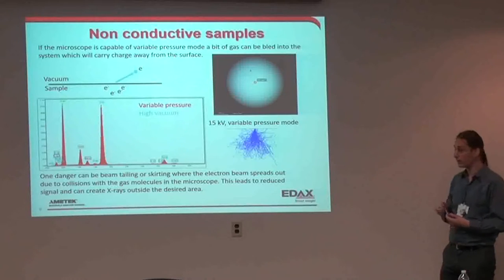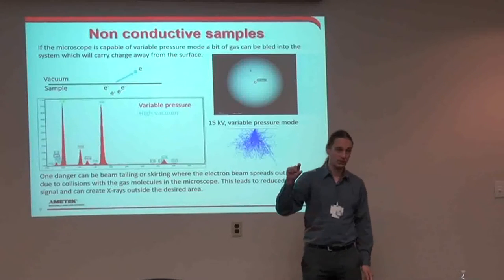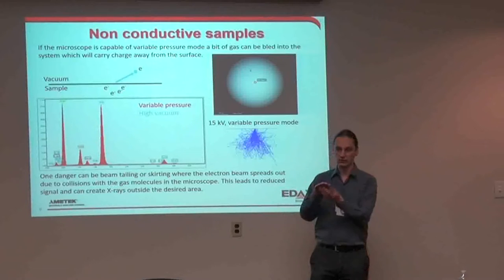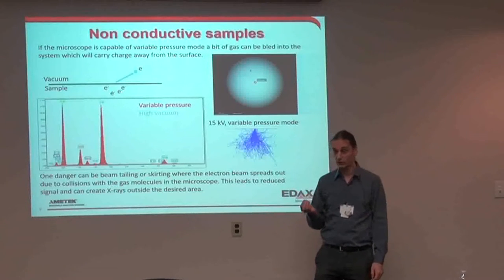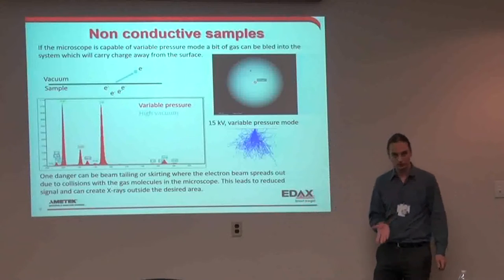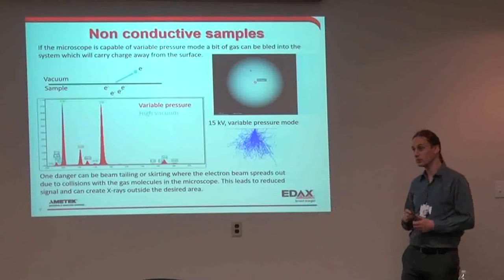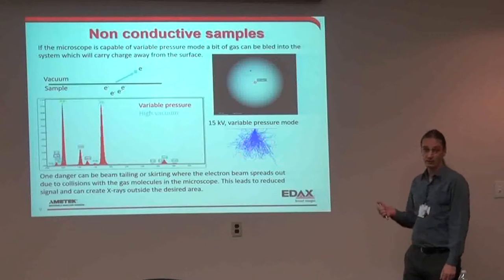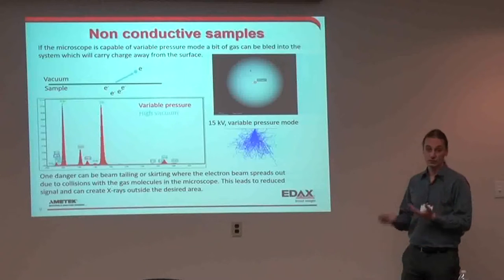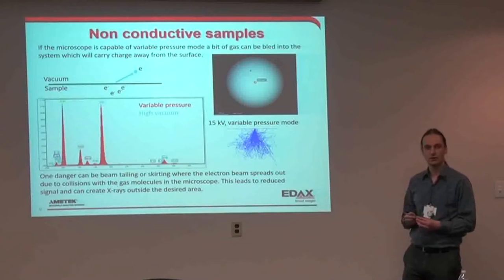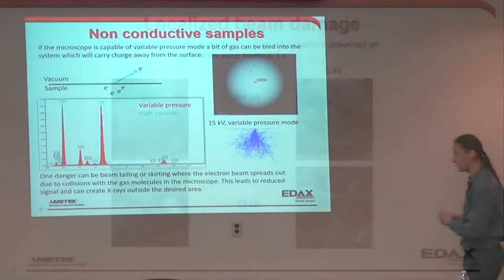There are tricks to reduce the beam skirt effect. Roger mentioned the pressure-limiting aperture cone you can insert in the column, which extends the high vacuum down into the sample chamber a little bit, so your electrons travel in high vacuum for longer. That limits how close you can move your sample to the pole piece, but there are options. You should be aware this effect exists and can be significant. To check whether it's a real problem, try changing the pressure — the skirt is roughly linear, so if you collect at 40 Pascals, try 80 or drop to 20 Pascals. If peaks double in height, that's a good indication those are artifact peaks from the skirting effect.